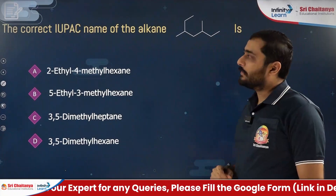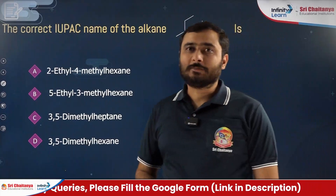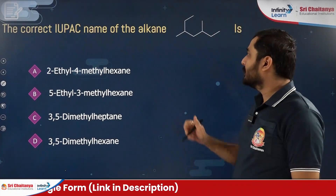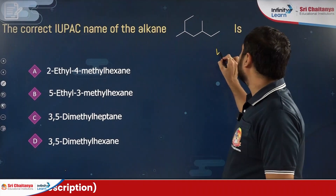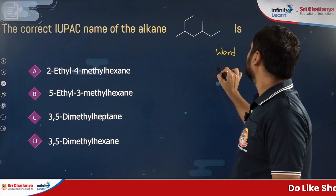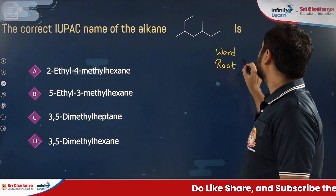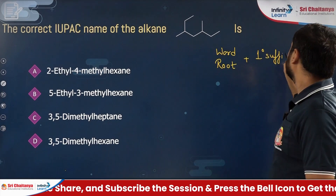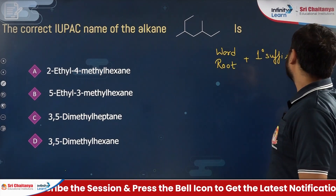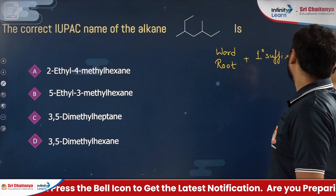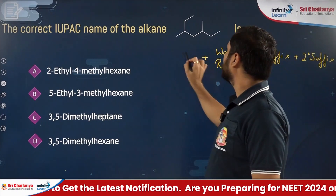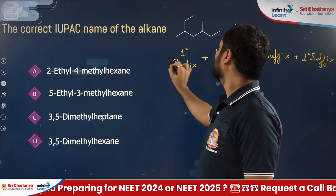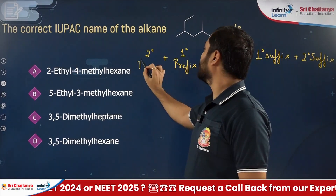Let us start with the first question: the correct IUPAC name of an alkane. If we talk about the structure of the name, the name contains first the word root, then the primary suffix, then the secondary suffix. Before the word root, the primary prefix is written, followed by the secondary prefix.